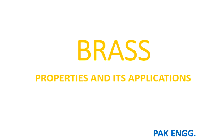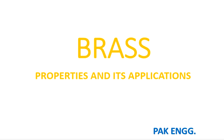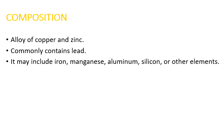Bismillahirrahmanirrahim. Assalamualaikum viewers, welcome to my channel Park Engineering. Today I am going to discuss about brass, its properties and applications. First of all, we see what is the composition of brass. Brass is basically an alloy of copper and zinc, and may also include iron, manganese, aluminum, silicon, or other elements.